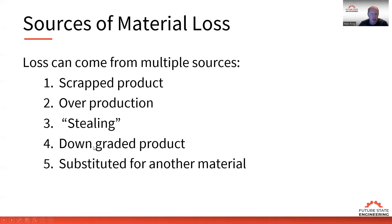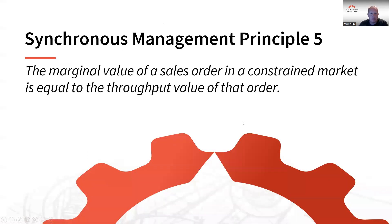If your organization has issues with any of these — scrap, overproduction, stealing, downgrading, or substitutions — and you also have supply chain issues, that's having huge negative effects on your business and profitability. Constrained material has a significantly greater impact on the organization than a constrained internal resource. Our next session will talk about the marginal value of a sales order in a constrained market — when the constraint is in the market, it's equal to the throughput value of that order.